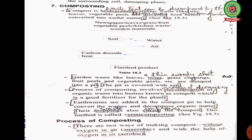Let us read the process of composting from the book, page 304. Composting is a biodegradable process — waste such as tree leaves, vegetable peels and discarded food items is converted into useful manure. In this figure you can see newspaper, leaves, grass, fruit, vegetables, kitchen waste, wooden materials and soil, which under the action of water, air, carbon dioxide and heat finally converts into organic matter, that is humus.